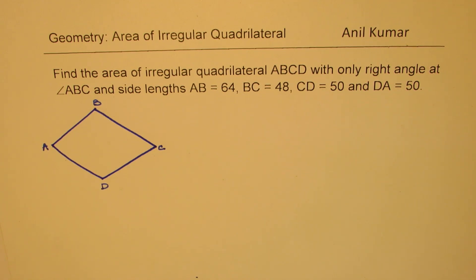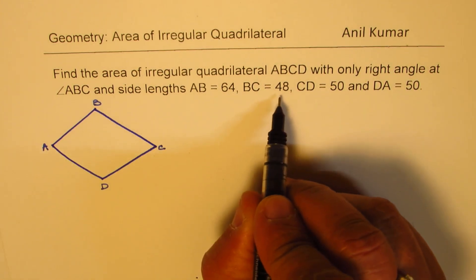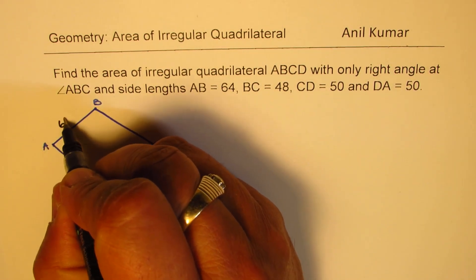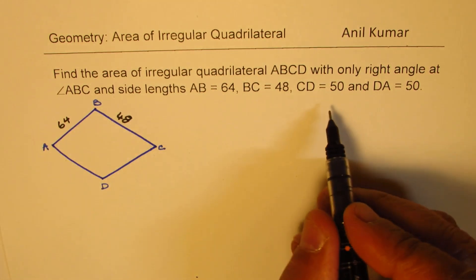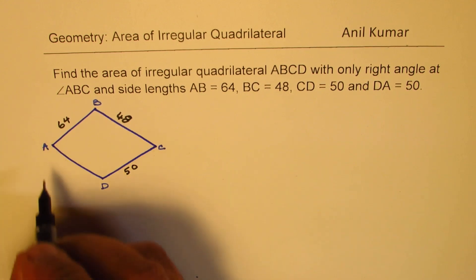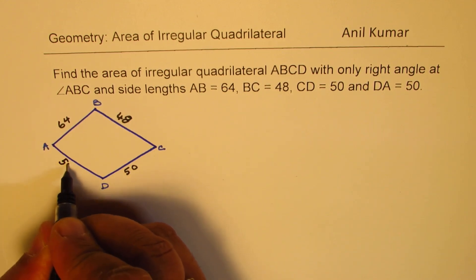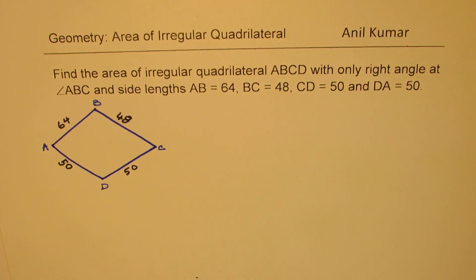The sides are given to us as 64, 48, 50, and 50. We are also given that the angle B is 90 degrees. So this angle is 90 degrees. Others are none of them is 90 degrees. We need to find area of this particular quadrilateral. How do we figure it out?